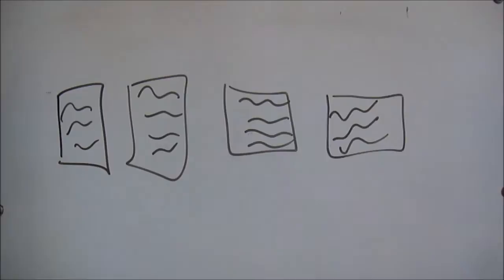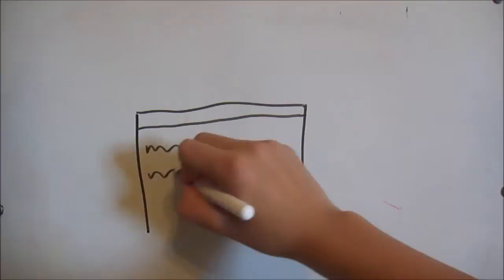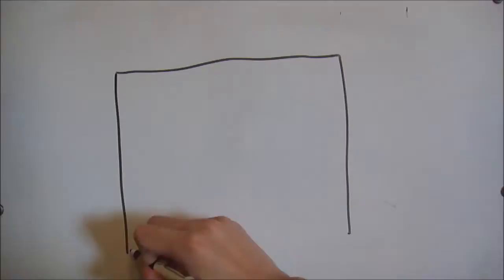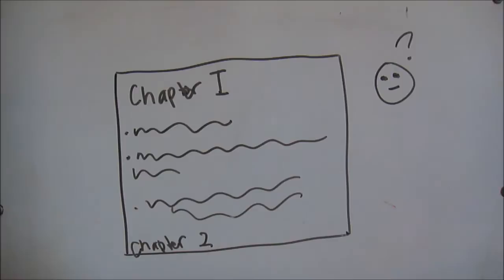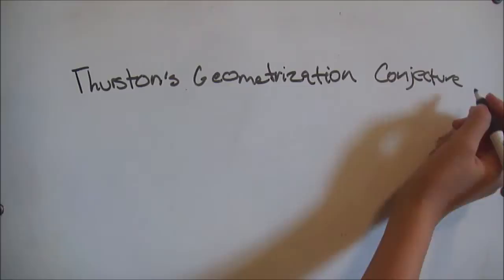There have been many attempts at proofs of this conjecture in the math world. One day, a document appeared online. It was a proof for Thurston's geometrization conjecture, which is a whole other story. The math community jumped on it, looking for mistakes. No mistakes could be found in this several-chapter proof.